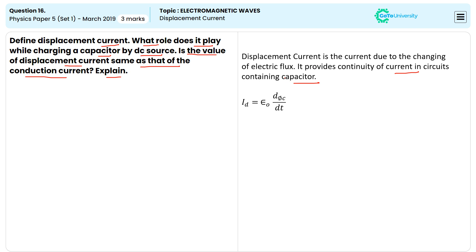And Id is equal to epsilon naught d phi by dt. This is the displacement current.